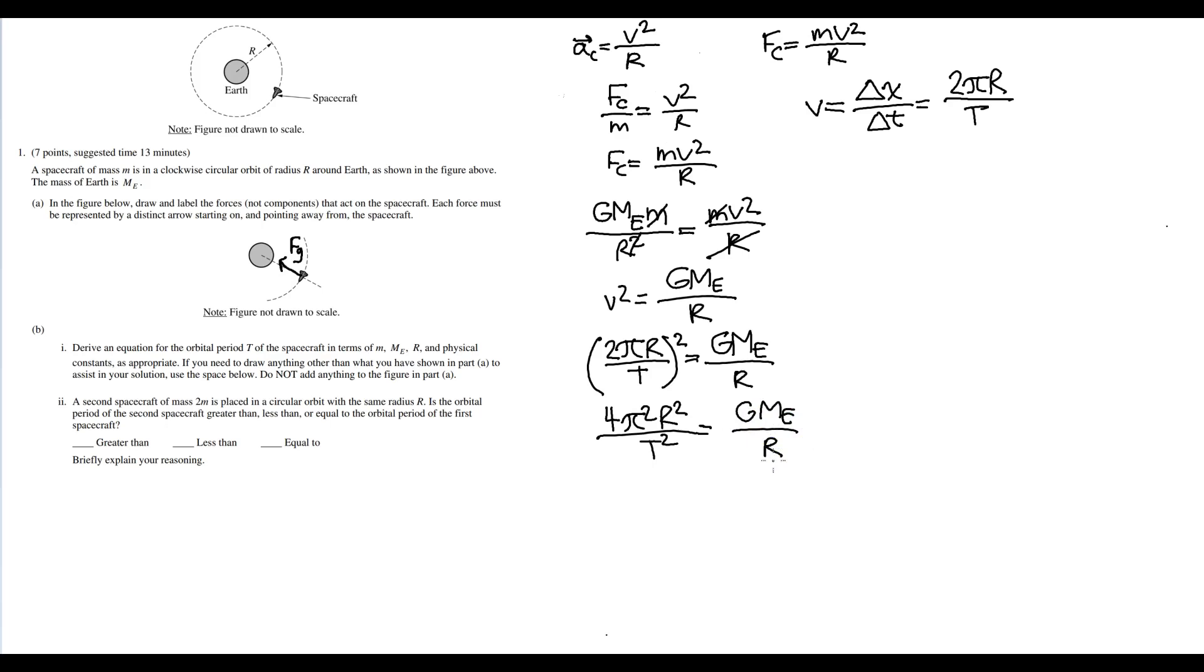You could try to isolate the T. So we get by dividing through by 4 pi squared R squared, so we have 1 over T squared equals G Me over 4 pi squared, then R squared times R will be R cubed, right? If you take the inverse of that, we get T squared equals, you just flip the numerator and denominator, we have 4 pi squared R cubed over G Me. And if you take the square root, you should get your answer. 4 pi squared R cubed over G Me. So this is your answer for part B, part 1.